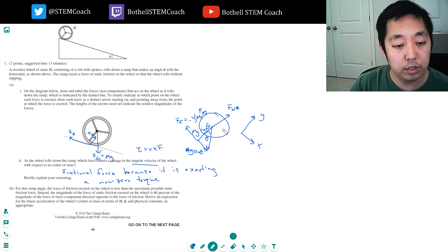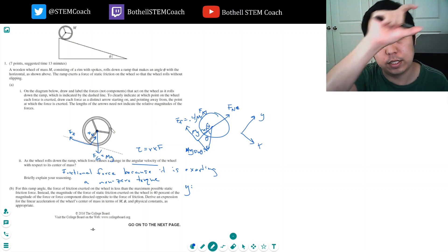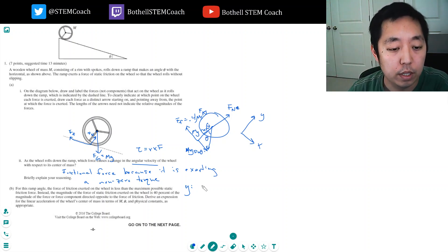So in the y direction, I have the normal force and I have a component of mg in there. And because it's not accelerating in the y direction, right? It's only moving in the x direction. It's not coming off the ramp in any way. The net force in the y direction. So the normal force has to equal mg cosine theta. Okay, that's the y direction.